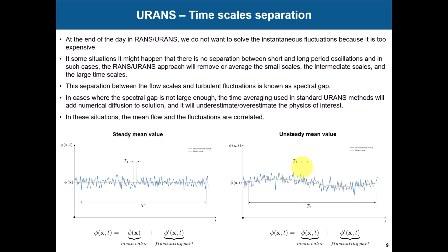Sometimes this spectral gap is very small, and you can imagine that when you apply that averaging, the averaging for the smallest scales is going to remove also the long-period oscillation. That's why you don't see it in URANS — that averaging is removing also that oscillation. So somehow you need to add more energy, add some forcing, some tripping, to trigger that behavior.